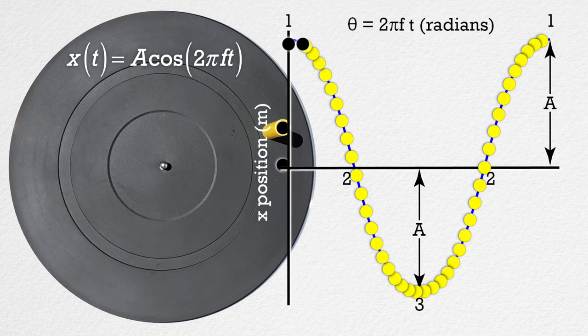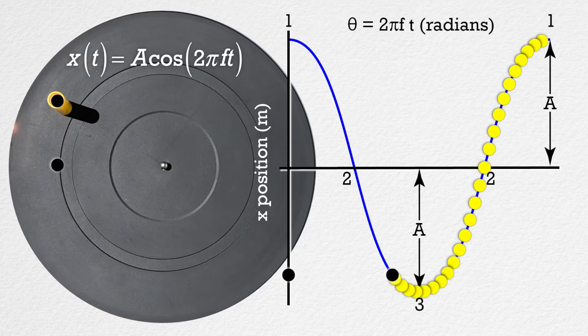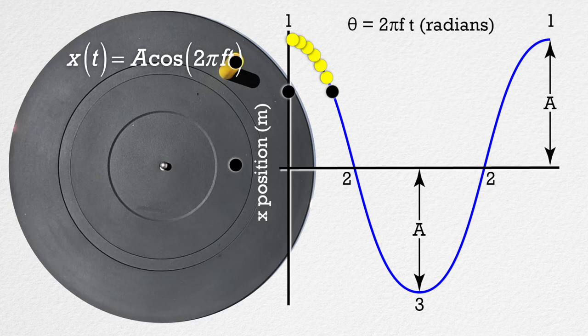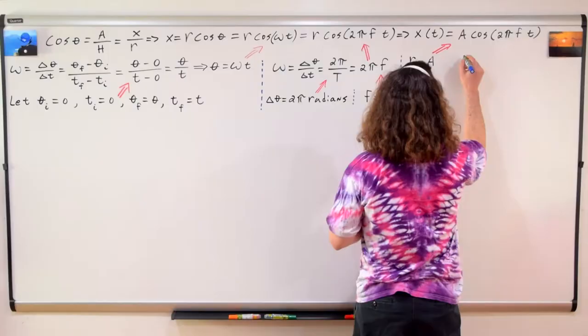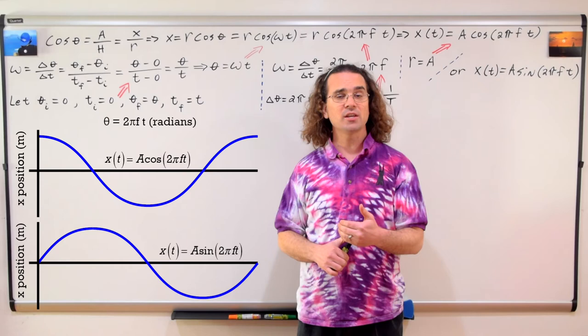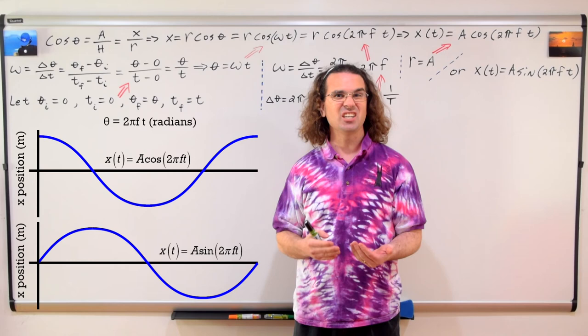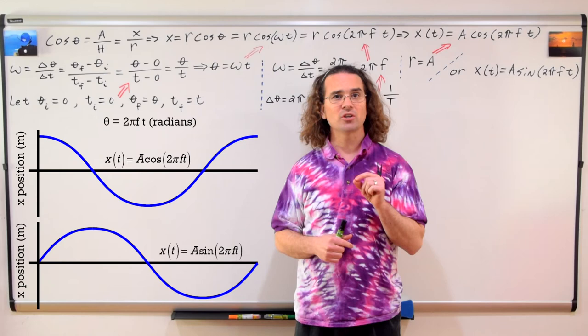Realize the equation we just derived is the equation given on the AP Physics 1 equation sheet. However, this equation assumes the initial position of the object is at its maximum positive value. That does not always have to be the case, which is why sometimes you will see this equation given in terms of sine instead. Notice this sine equation only differs from the cosine equation due to the initial condition at time t equals zero. At time equals zero, the sine of zero is zero, so the initial position is zero. So the sine equation can be used if the object starts at the equilibrium position and is moving to the right.